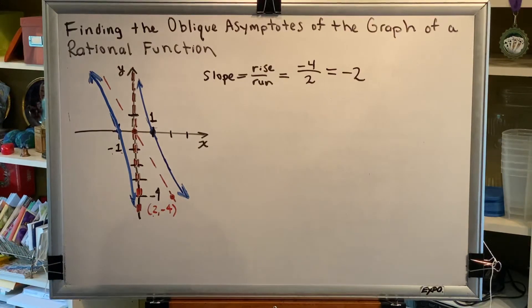So now we have our slope. We have one of the two things that we need. The other thing we need is a point, and there are two to choose from.